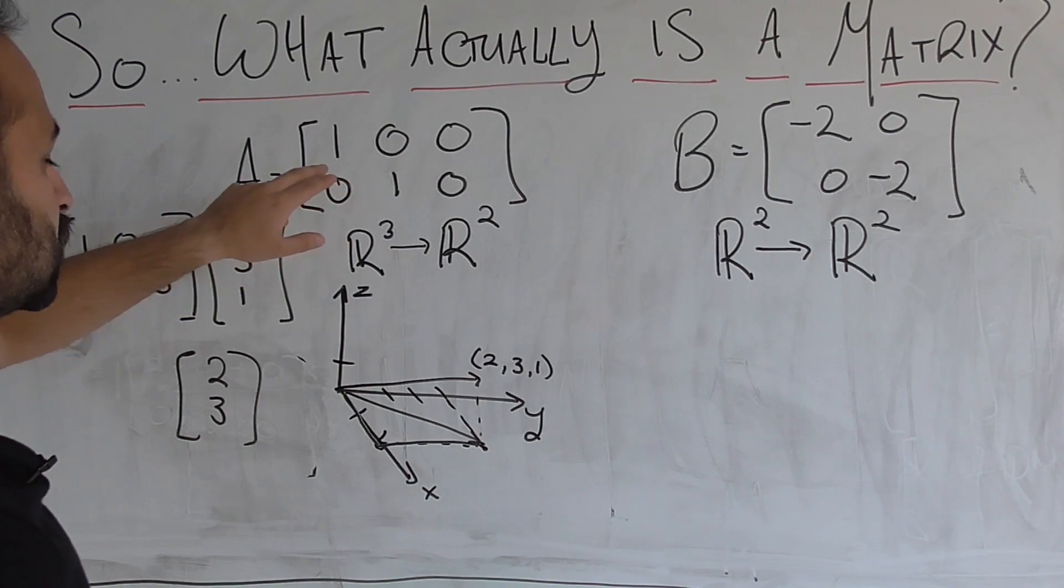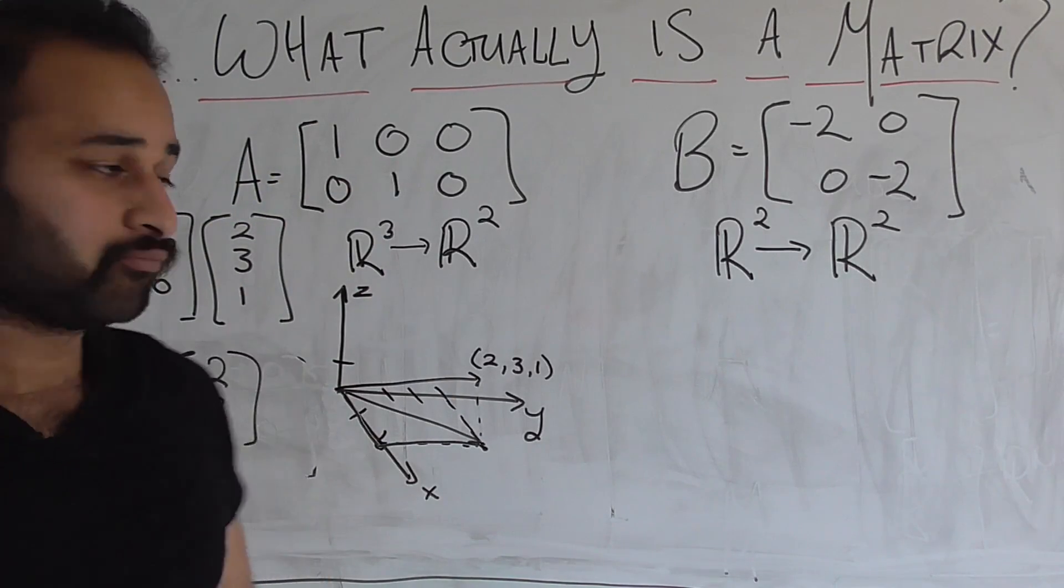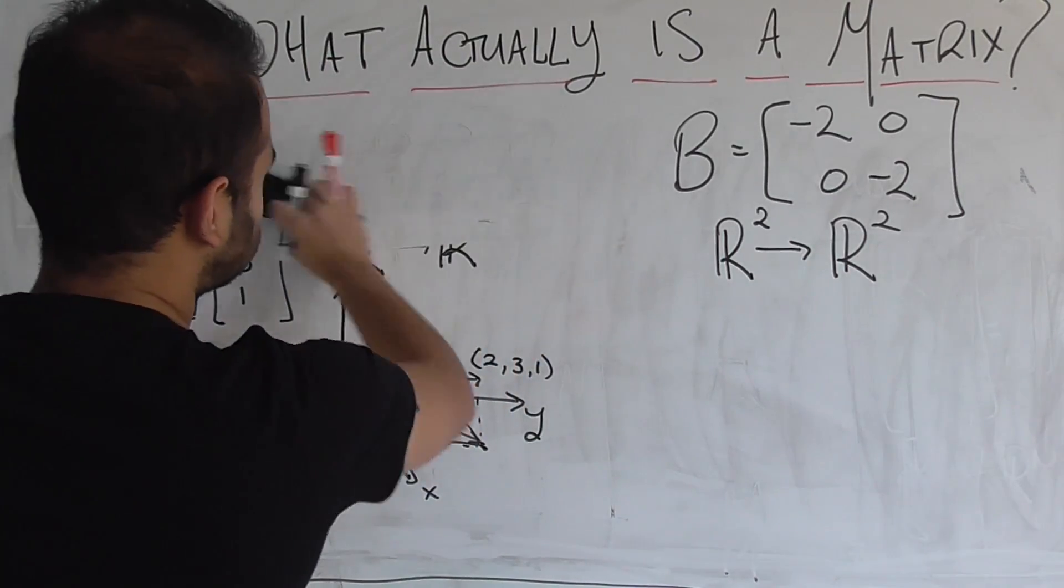And all we're doing is just preserving the X coordinate in the top one, and then the Y coordinate in the bottom one. So that's the type of linear transformation this matrix does.